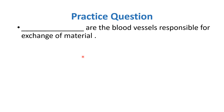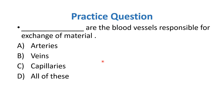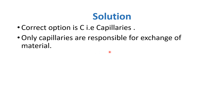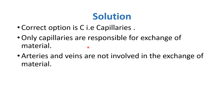The practice question on blood vessels: 'Dash are the blood vessels responsible for the exchange of material.' Which blood vessels are involved in the exchange of material? Option A: arteries. Option B: veins. Option C: capillaries. Option D: all of these. The answer is capillaries — option C. Only capillaries are responsible for the exchange of material. Arteries and veins are not involved in the exchange of material.